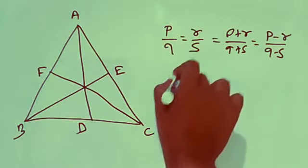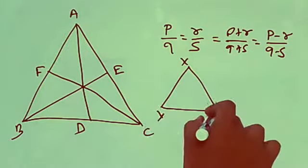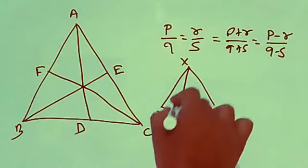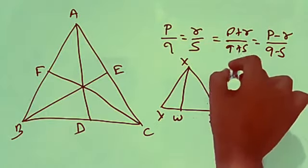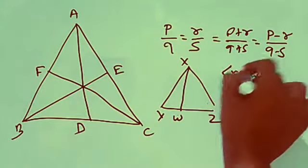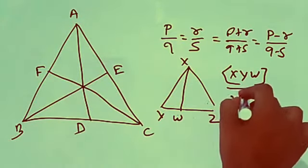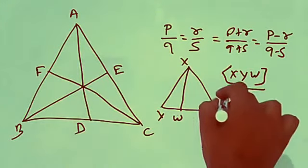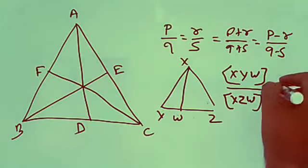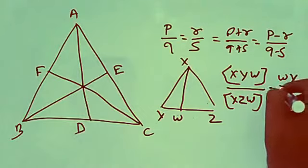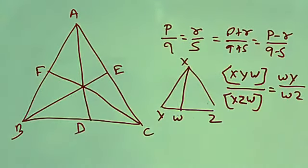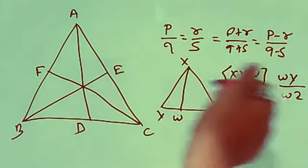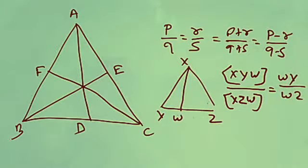And in a triangle X, Y, Z, if we draw a line W, then the area of triangle XYW divided by the area of triangle XZW is equal to WY/WZ. Because both triangles have a common point X, therefore the height is the same. So the ratio of their areas is equal to YW divided by WZ. These two things will be used in the proof of Van Aubel's theorem.